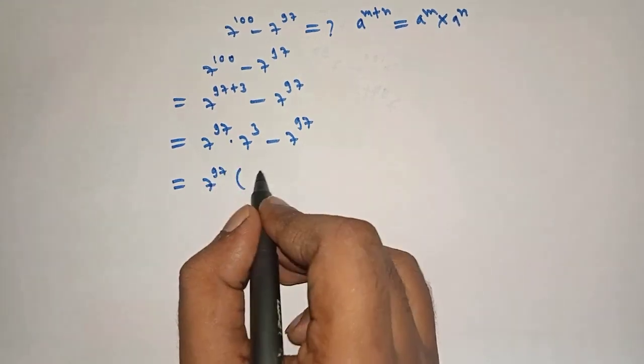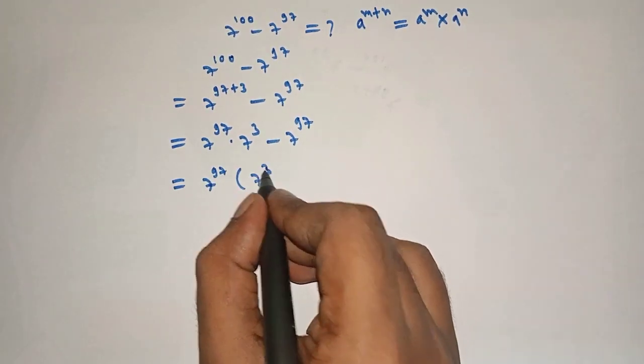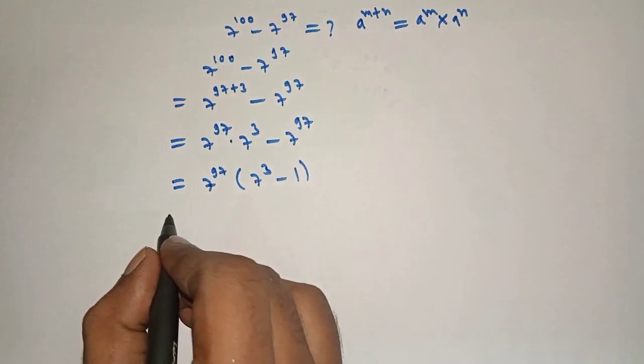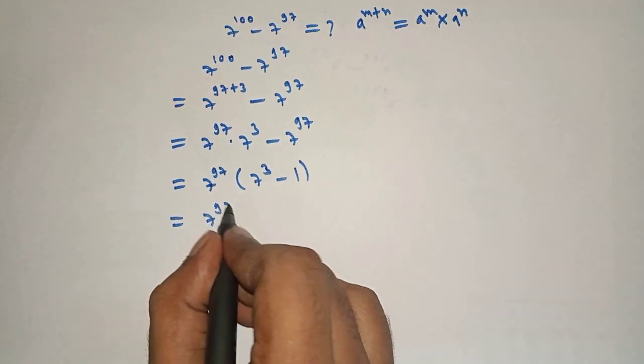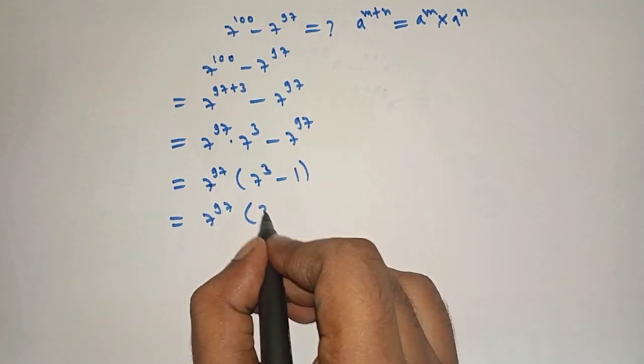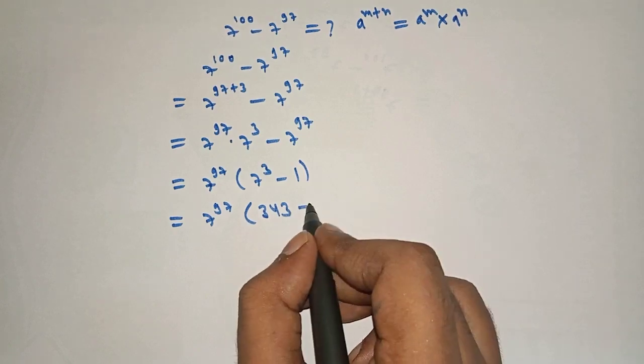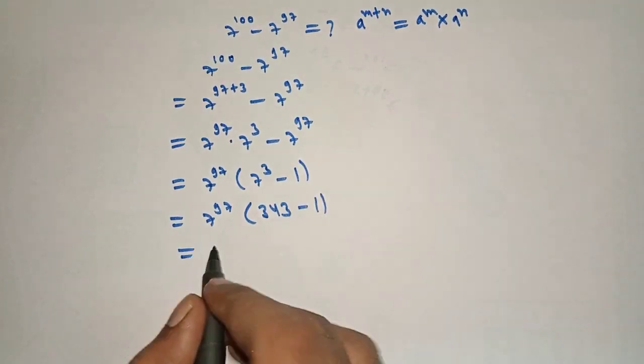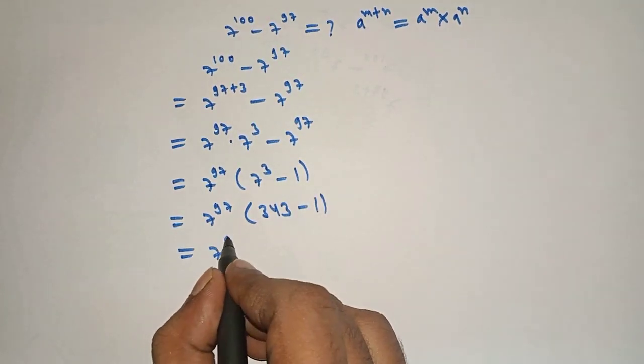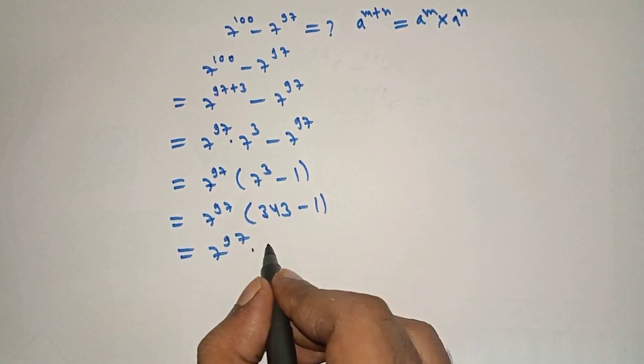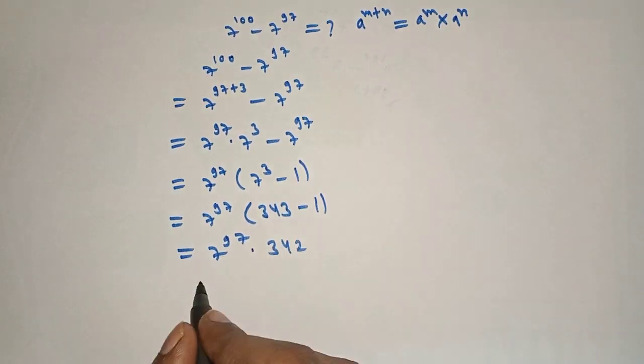What will remain under the bracket: 7 raised to 3 minus 1, which is equal to 7 raised to 97 into 343 minus 1, which is equal to 7 raised to 97 into 342.